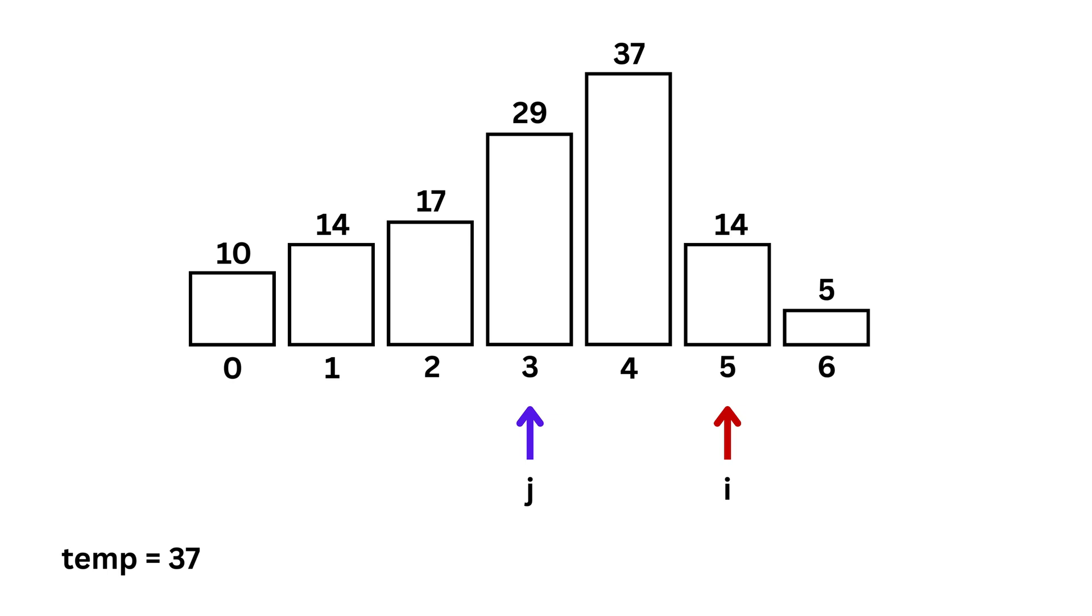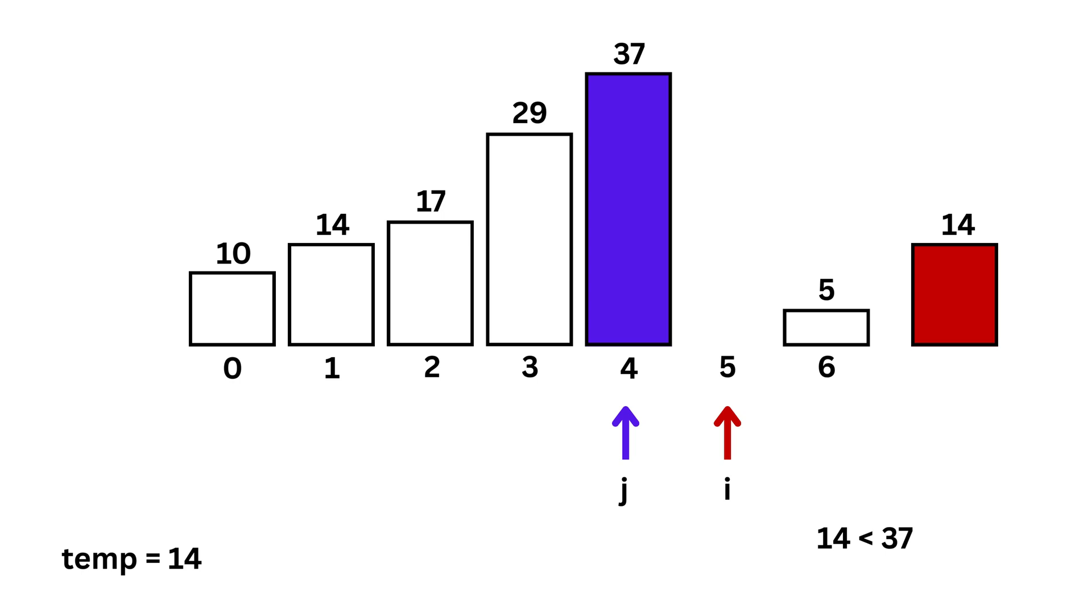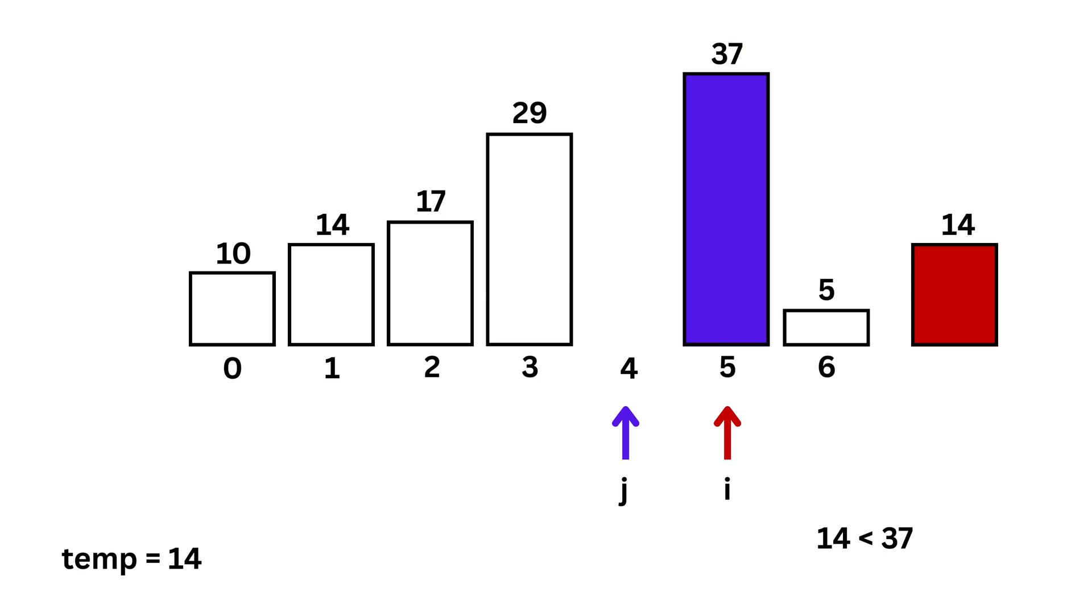So, i is at position 5, and temp becomes 14. j is equal to 4, pointing to 37. Since 14 is smaller, we shift 37.